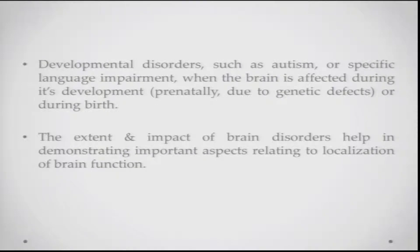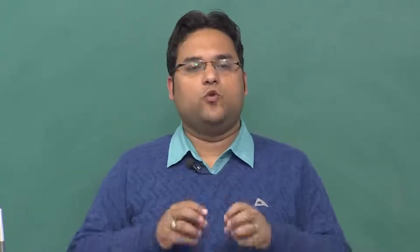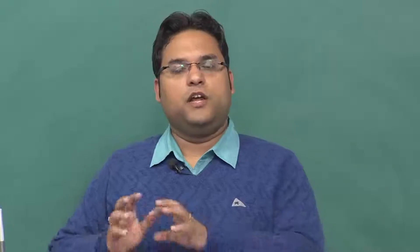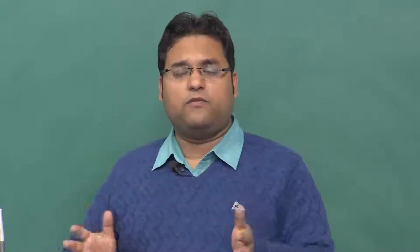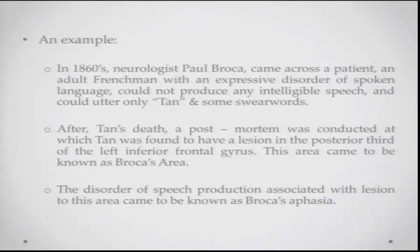Developmental disorders such as autism or specific language impairments arise when the brain is affected during its developmental phases — for example, prenatally, due to genetic defects, or due to exposure to certain harmful chemicals. The extent and impact of these brain disorders is very helpful in demonstrating important aspects related to the localization of brain function. Today we will talk about aspects which lead to particular profiles of difficulty in production of speech.